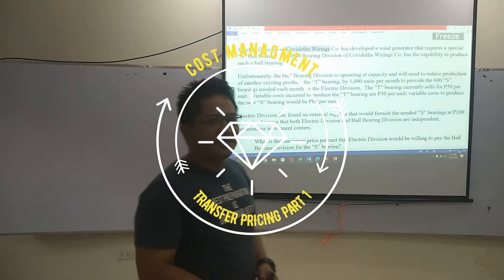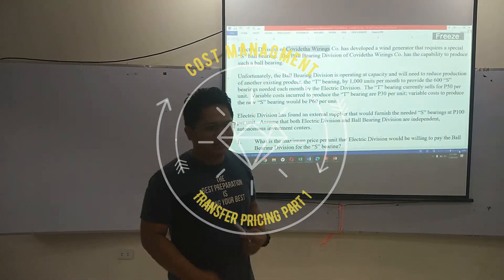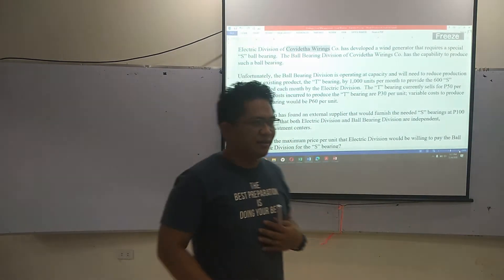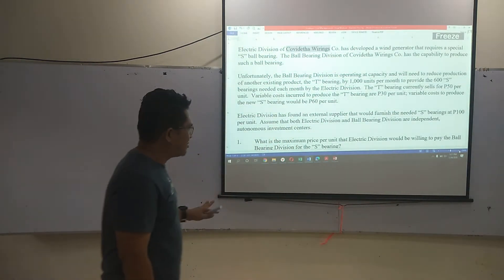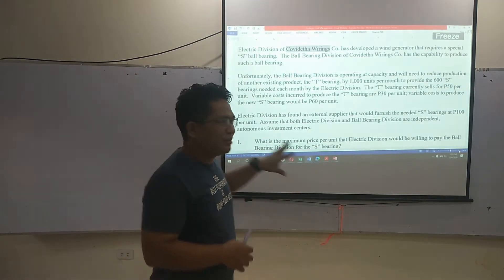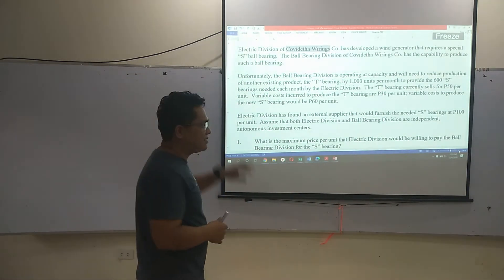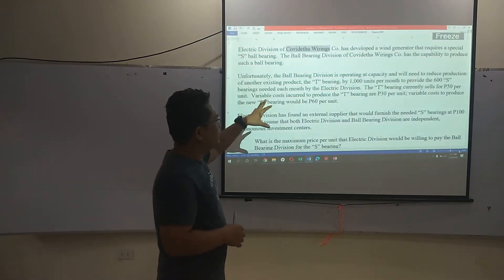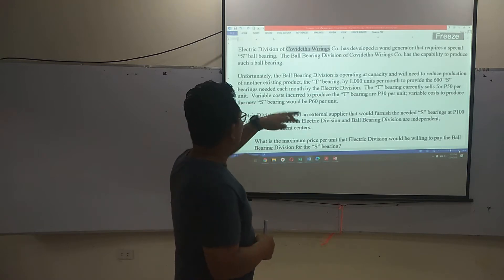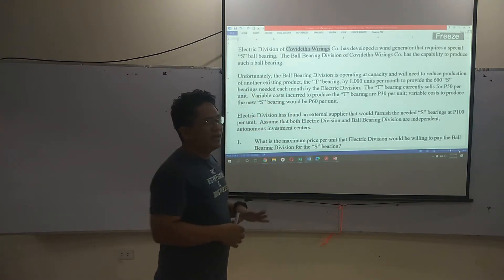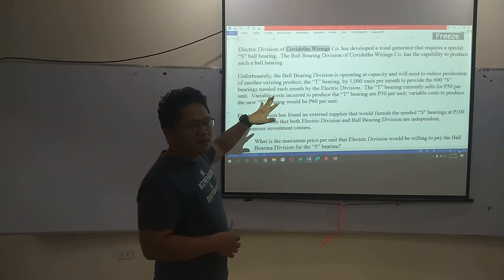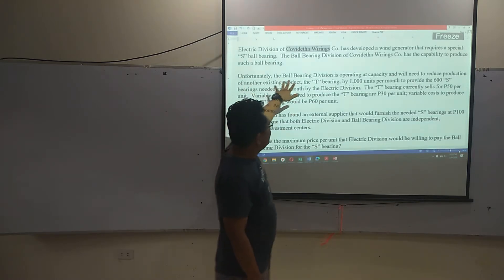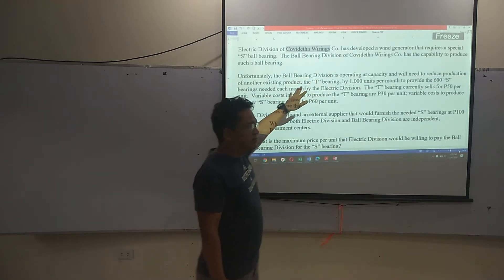We will be discussing decentralized departments as well as transfer pricing. Let's dive into this problem. We have a division of Covita Wiring. It has developed a wind generator that requires special S ball bearings. These ball bearings can be produced by the ball bearing division of Covita.